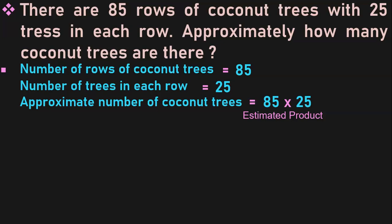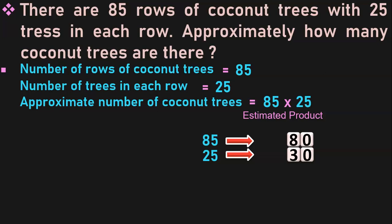Product estimation is a separate topic covered in a linked video. In estimating products, we always round off to the nearest tens or hundreds. Here we round to the nearest ten. 85 can be rounded down to 80, and 25 can be rounded up to 30. Whenever a number is at the mid value (5), both numbers here are at mid value — so we round one down and one up to get the correct approximate value. That is why 85 is rounded to 80 and 25 is rounded to 30.